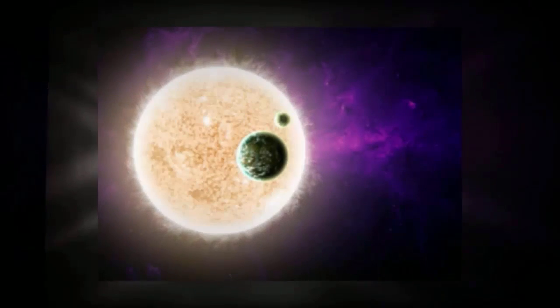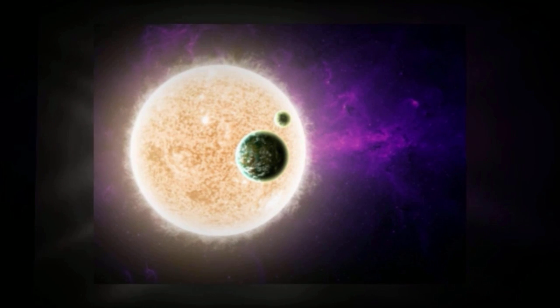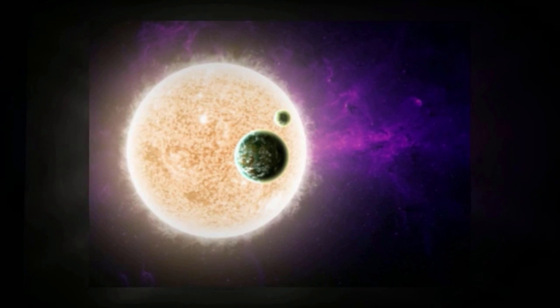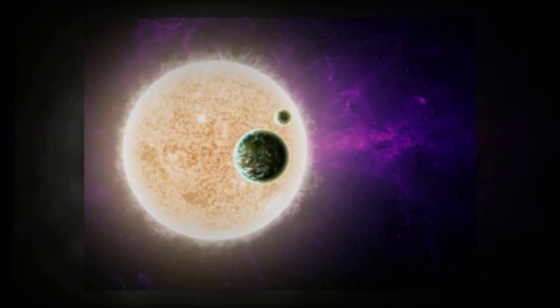If you could look at the Sun outside of our atmosphere without blinding yourself, you'd see that the Sun is actually white in the human visual spectrum, not yellow, despite being classified as a yellow dwarf.